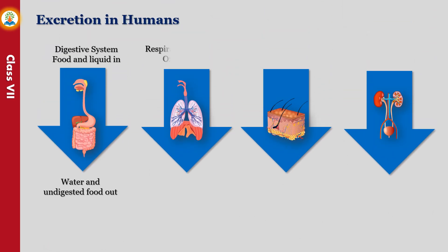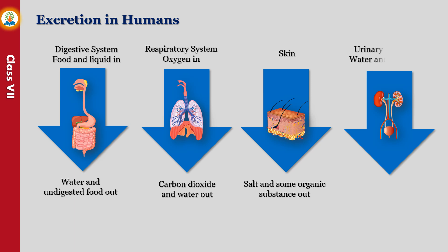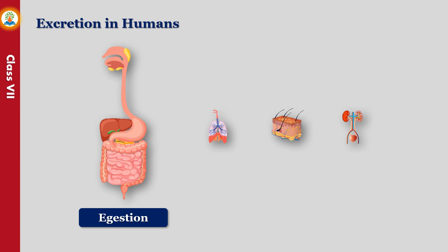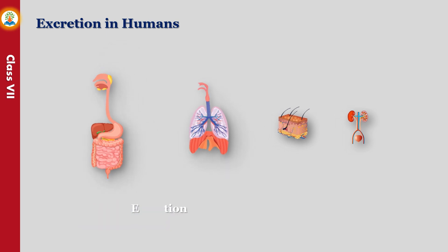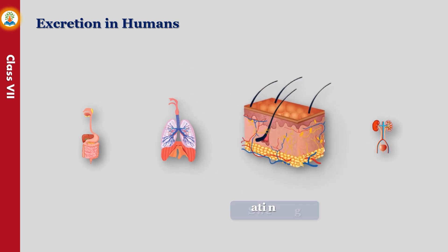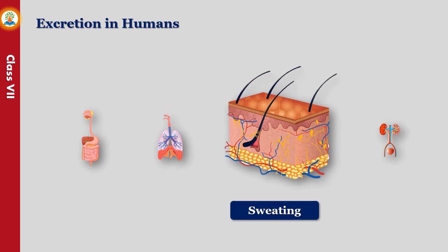In humans, different forms of waste products are eliminated from the body by different mechanisms. Defecation is a process by which solid undigested food products, along with other waste products formed during digestion, are removed from the body; they are collected in the large intestine and expelled through the anus as feces. Exhalation is a process in which gaseous waste such as carbon dioxide and excess water vapor are expelled through the lungs. Sweating helps to expel water, small amounts of urea, and salts through sweat glands present in the skin; sweating also helps in cooling the body when temperature is high.